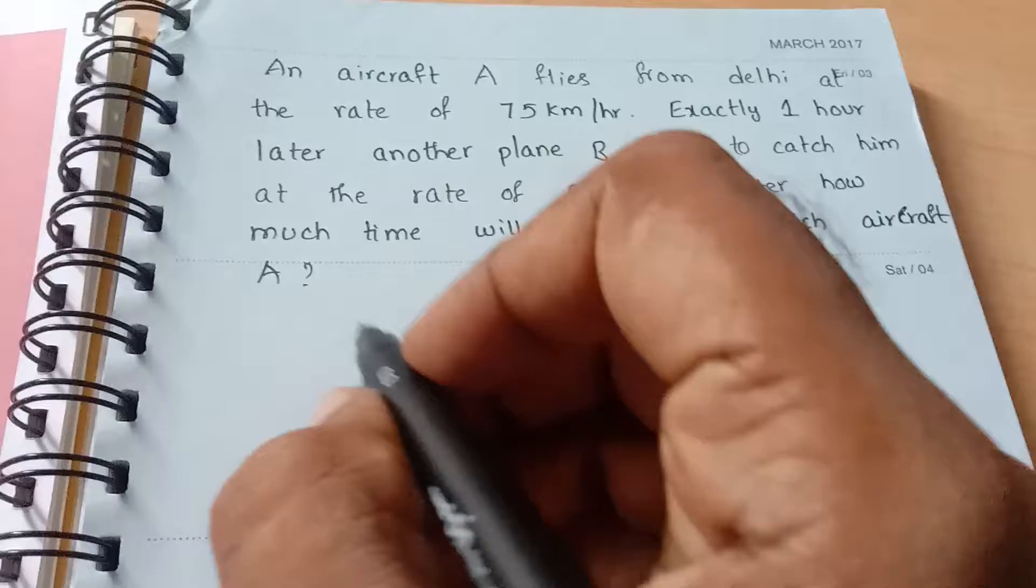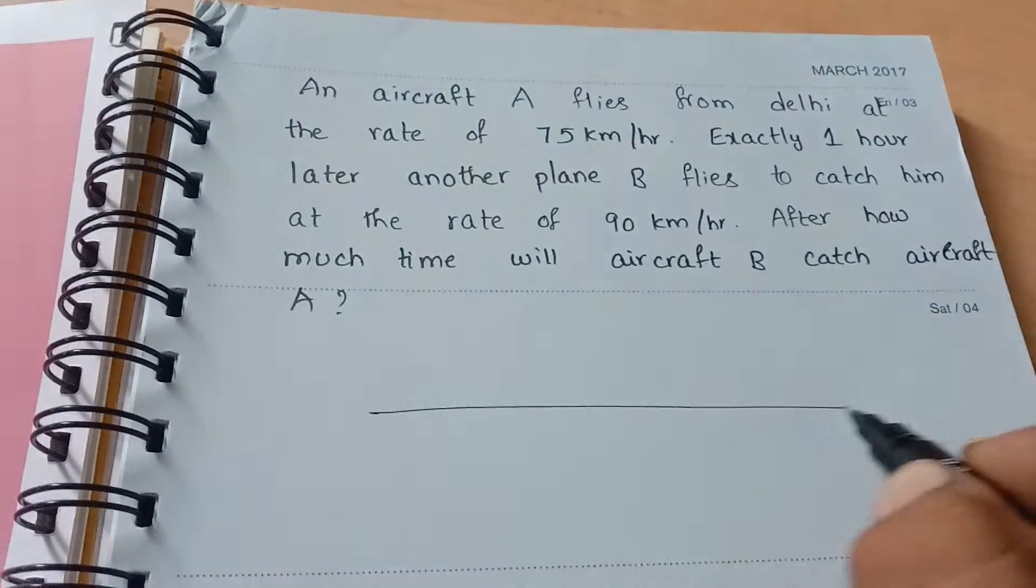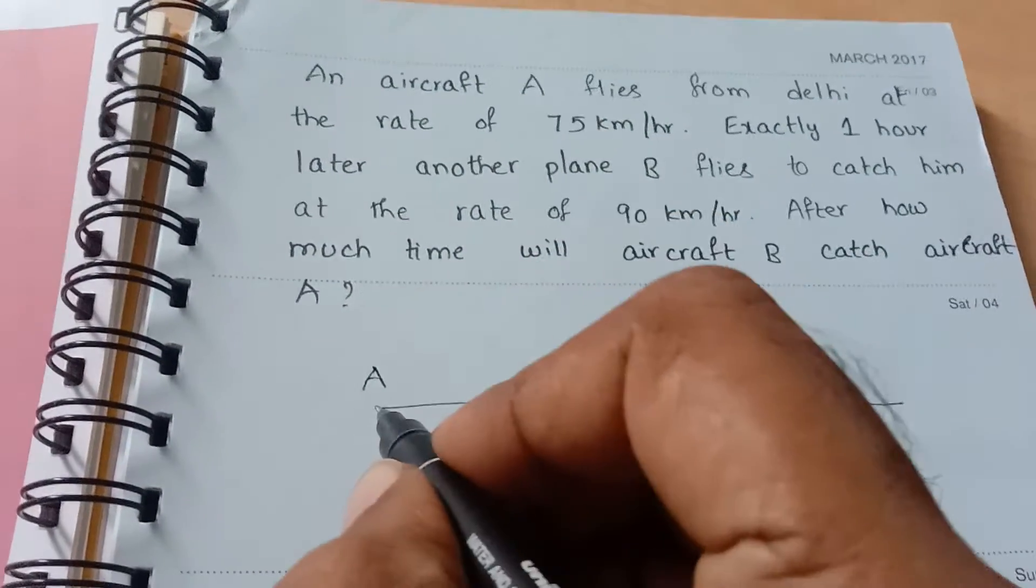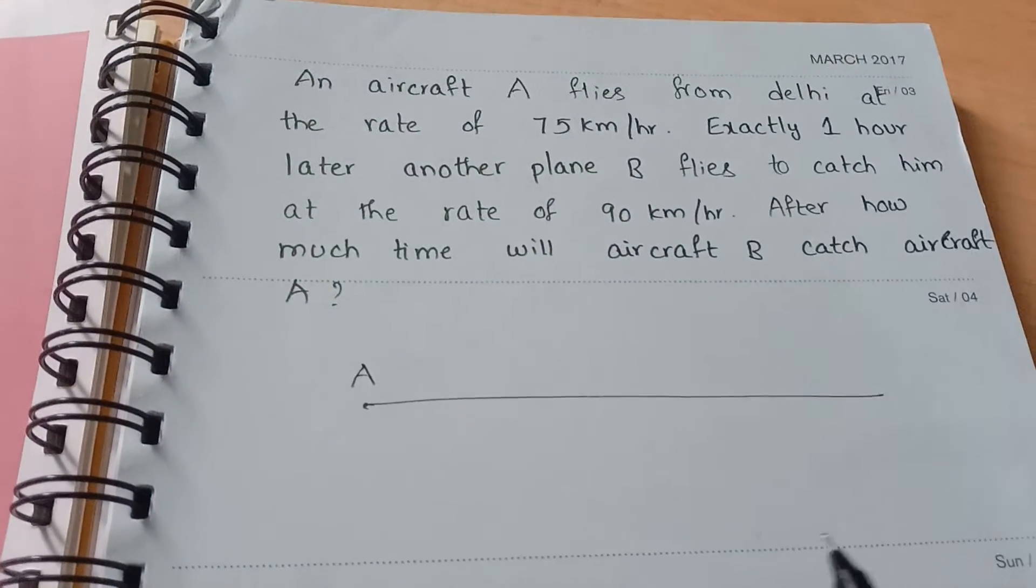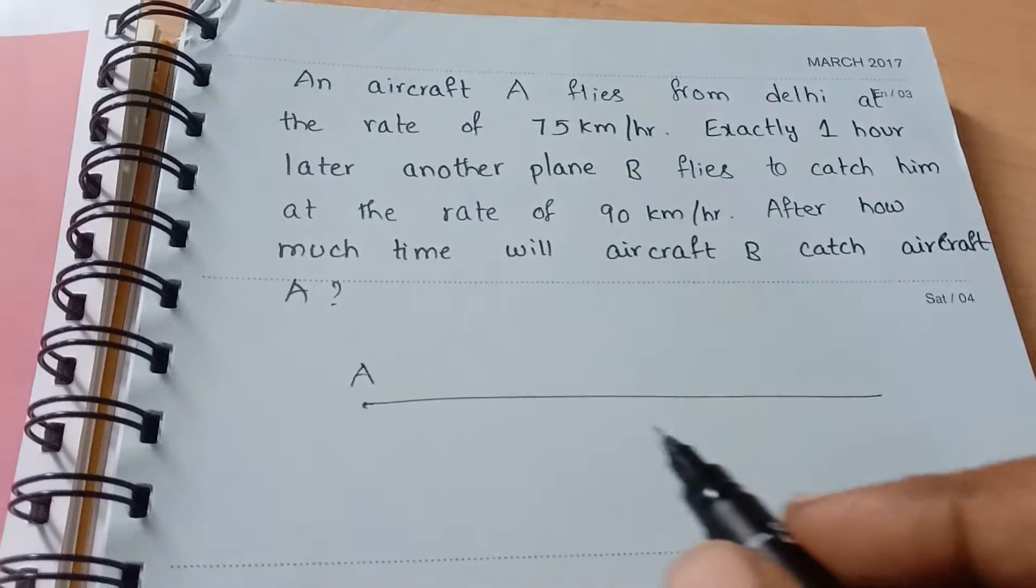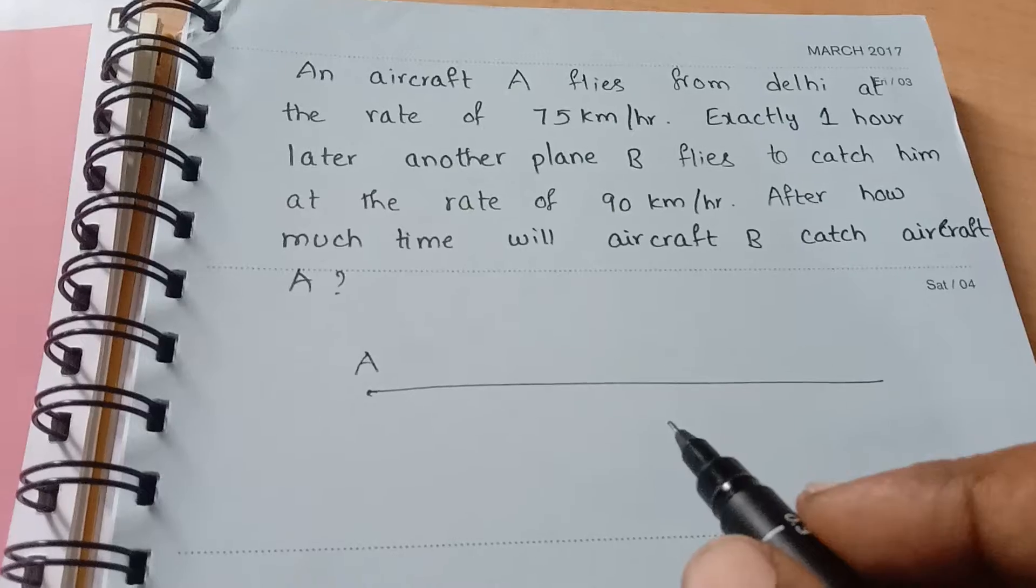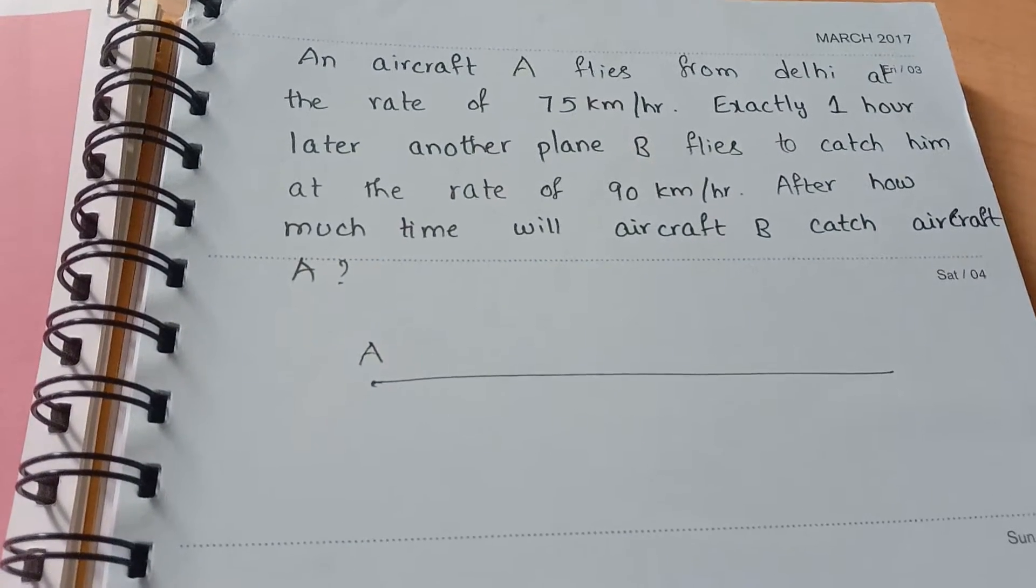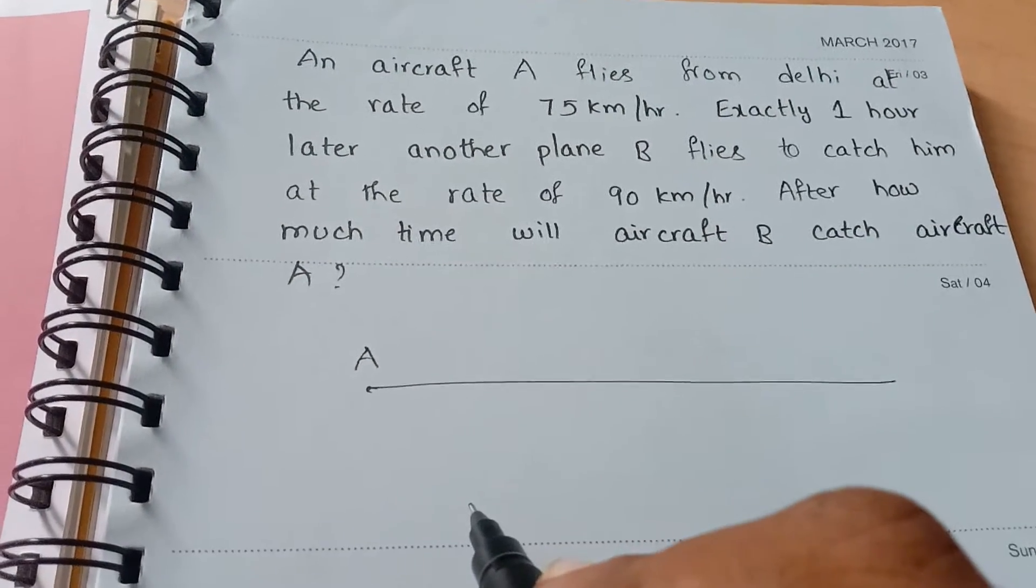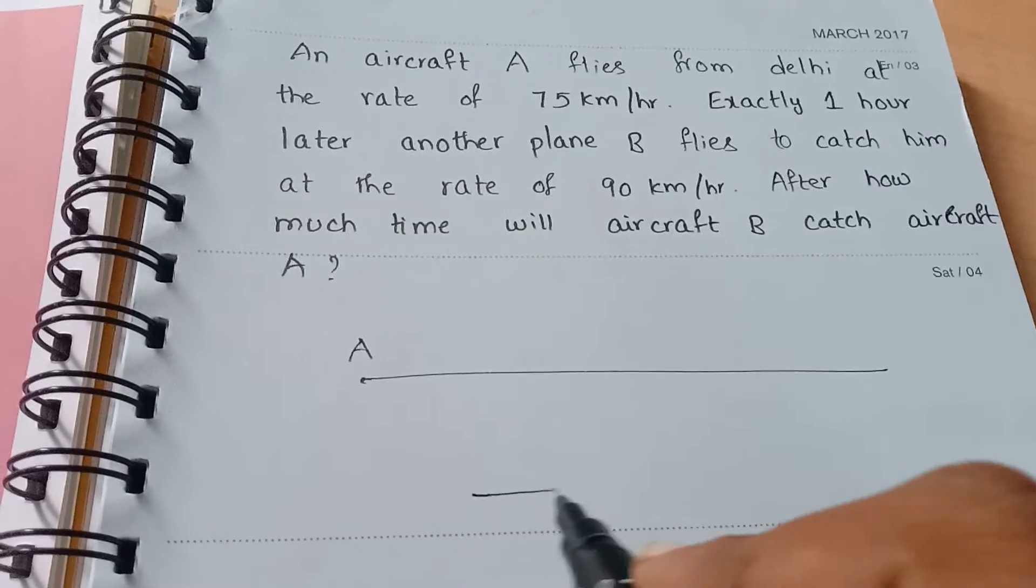Okay, now see, aircraft A is here. It is from Delhi, it is flying at the rate of 75 km per hour. And after one hour, aircraft B started.